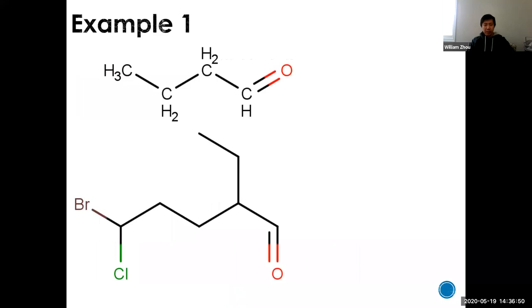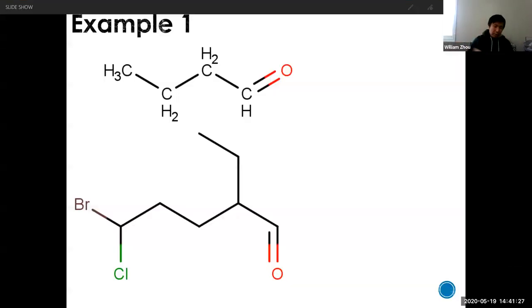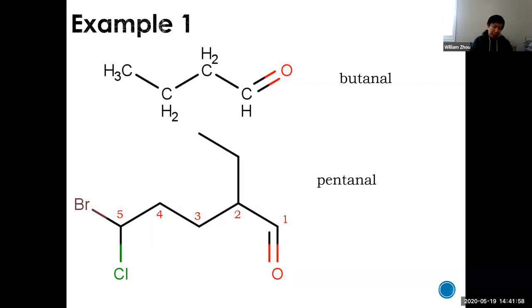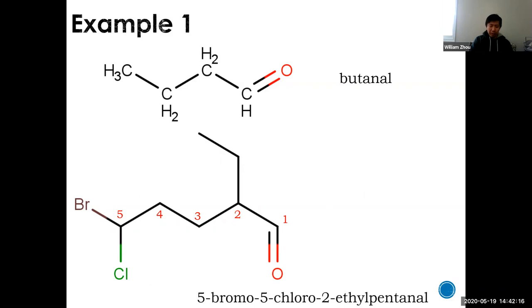Naming aldehydes is one of the easiest to name. For the practice problems: the first one has four carbons with a double bond O on the terminal carbon — that's just butanal. The next one: count starting from the double bond O — one, two, three, four, five — five carbons, so pentanal is the parent. The substituents are 2-ethyl, 5-bromo, and 5-chloro. Alphabetically, B before C before E: 5-bromo-5-chloro-2-ethylpentanal.